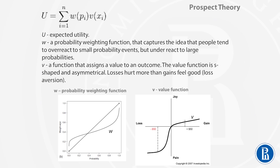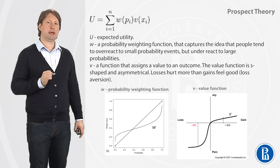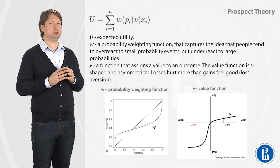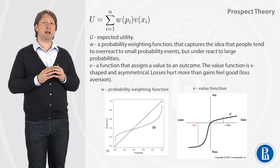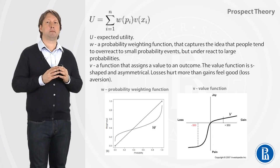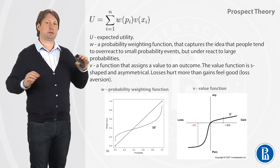Prospect theory suggests that expected values are the products of the probability weighting function and a value function. The probability weighting function is a subjective estimate of probabilities, as you can see graphically on the lower part of this graph. The probability weighting function overestimates small probabilities and underestimates large probabilities, capturing our behavioral tendencies.